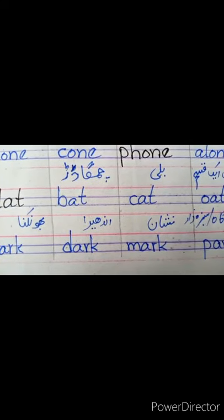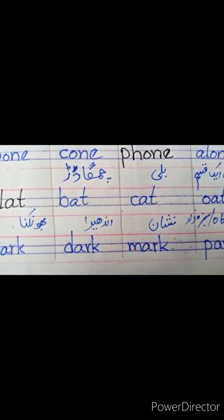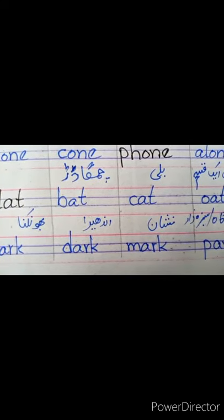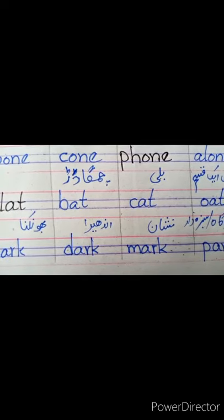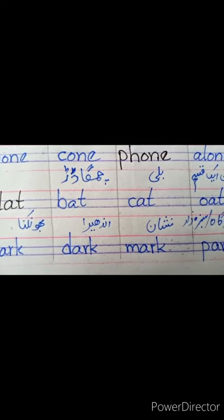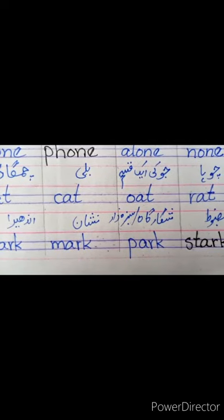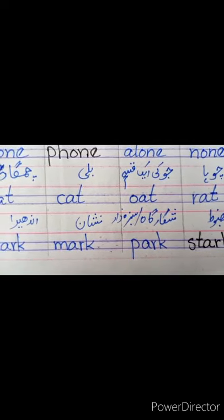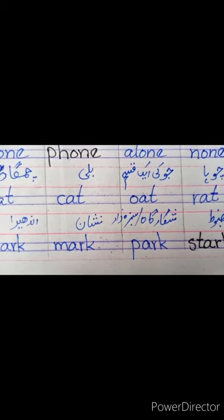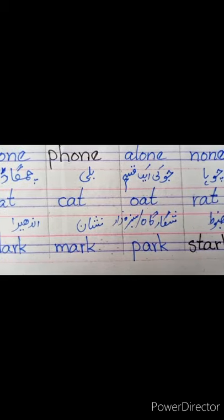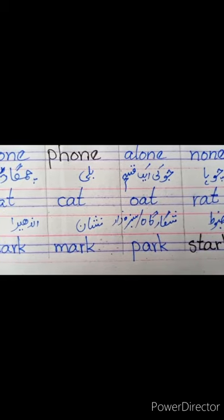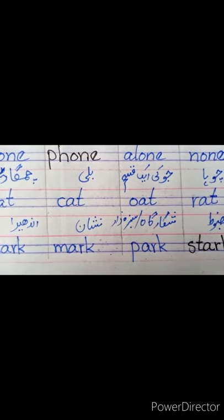Second one is 'dark'. دیکھیں A, R, K پہ end ہے. Dark means اندھیرا یا تاریک. Third one is 'mark' — M, A, R, K. اس کا مطلب ہے نشان — A, R, K پہ end ہے.